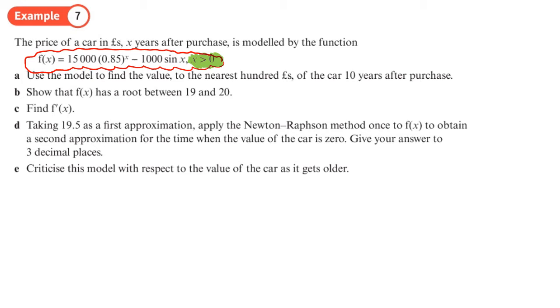So part a, what we want to do is use the model to find the value to the nearest hundred pounds, so we're gonna have to do some rounding of the car after 10 years of purchase. So really all we need to do is substitute x equals 10 into that, so we're just working at f of 10 basically. So it's going to be 15,000 times by 0.85 to the power 10 minus 1000 sine at 10.